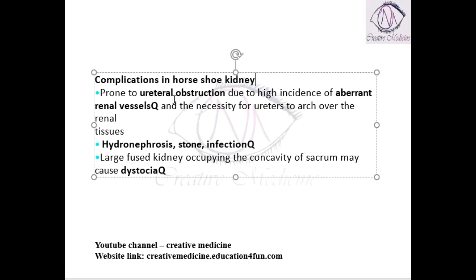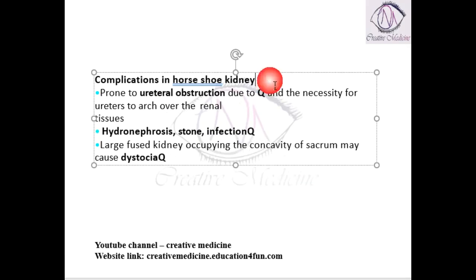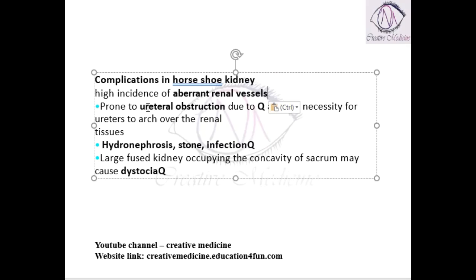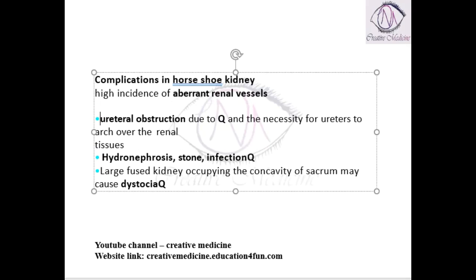Number 1: in the horseshoe kidney, the horseshoe kidney can have obstruction. Why? Because there is a higher incidence of aberrant vessels. This higher incidence of aberrant vessels will lead to the risk of ureteric obstruction in the patients.